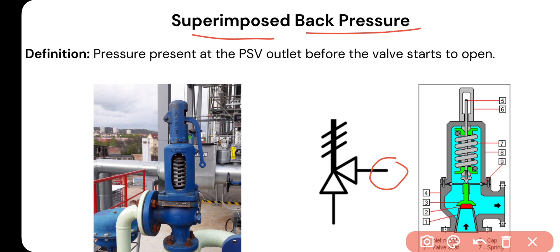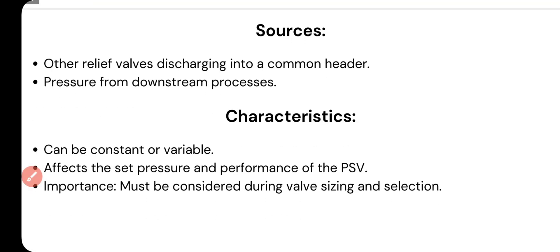The first type is superimposed backpressure. This is the pressure present at the PSV outlet before the valve starts to open. In other words, whatever pressure is present at the outlet of the PSV before the valve opens is called the superimposed backpressure.